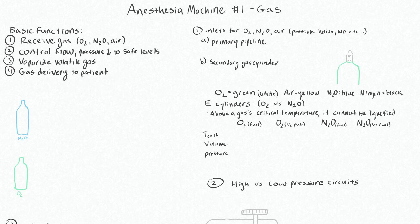In this video we'll talk about the basic functions of the anesthesia gas machine, which is to receive gas — whether that's oxygen, nitrous, air, or something else — control the flow of those gases, decreasing the pressure to safe levels, vaporizing some type of volatile gas to anesthetize the patient, and of course delivering that gas to the patient.